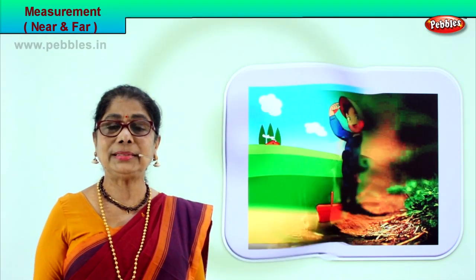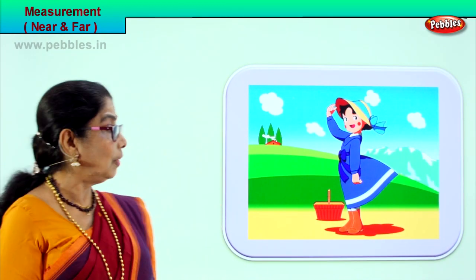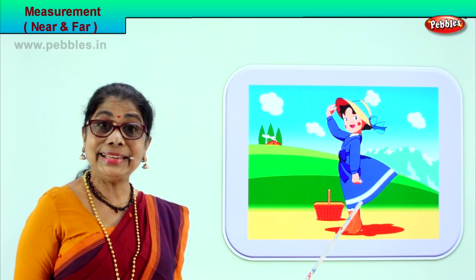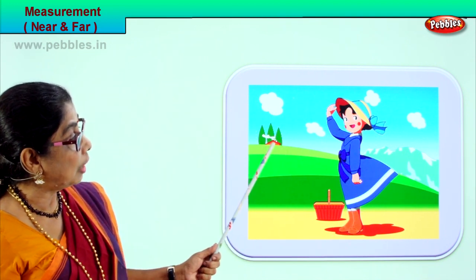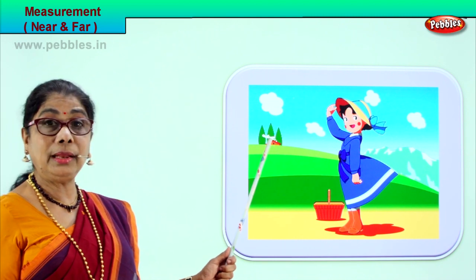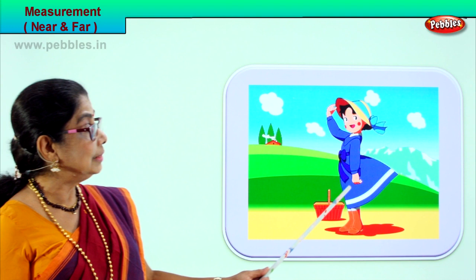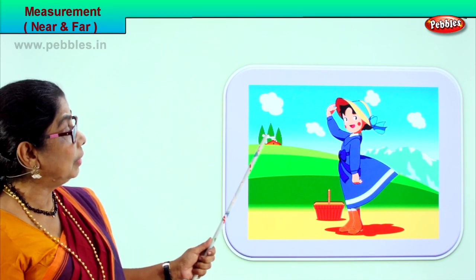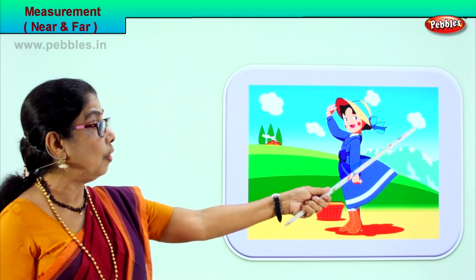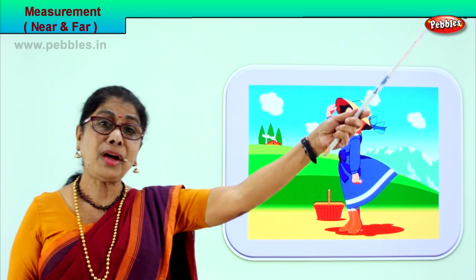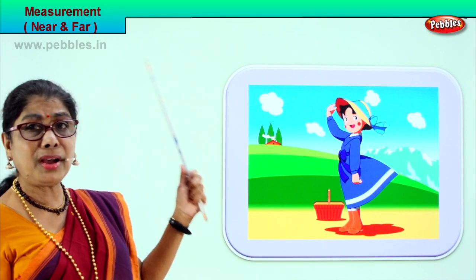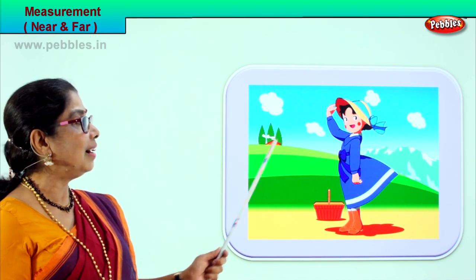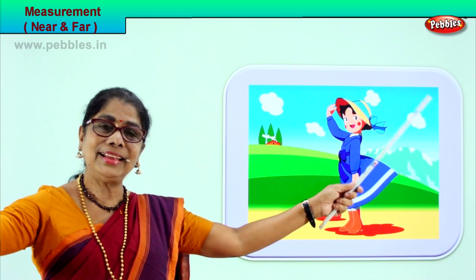Let's look at another picture and try to understand what is near and what is far. Here is a lovely picture of a little girl. She is very close to you, so you will say she is near. And there is a little house far away down the hill - a tiny little house you can hardly see. The cloud is far away, and the mountain is so far. Something that is close by is near, something far away is far.